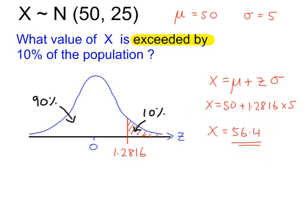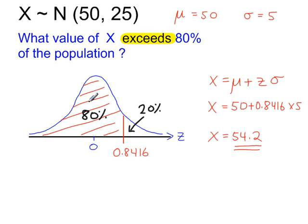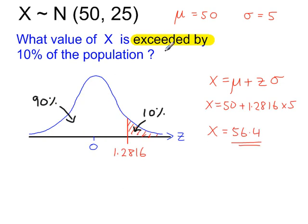And in the previous example, 80% of the population is less than this value of x. So remember this. If the question says exceeds a certain percentage, then shade that percentage to the left. If the question says exceeded by a certain percentage, then shade that percentage to the right.